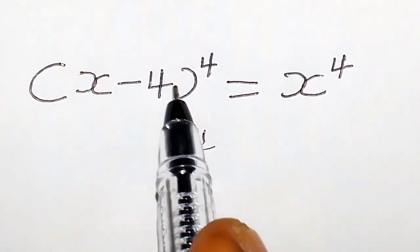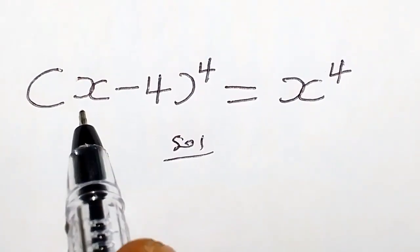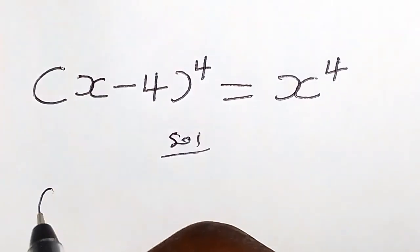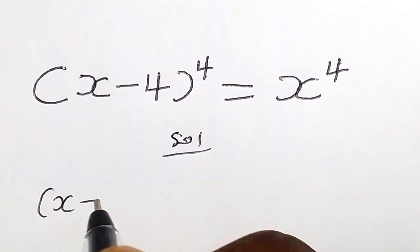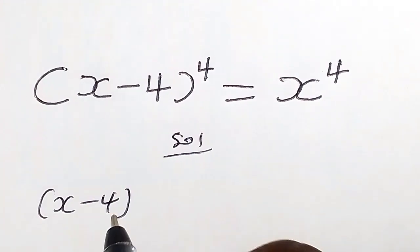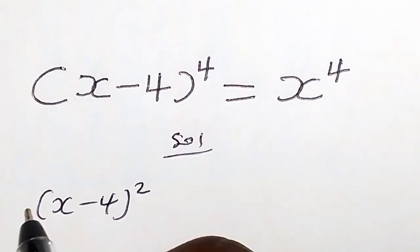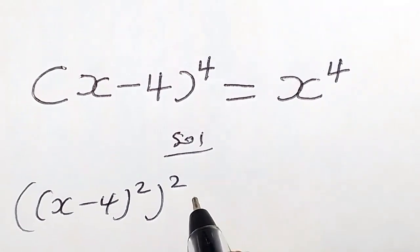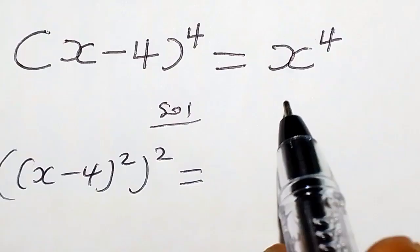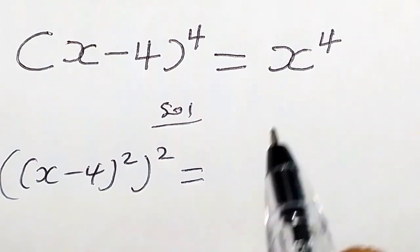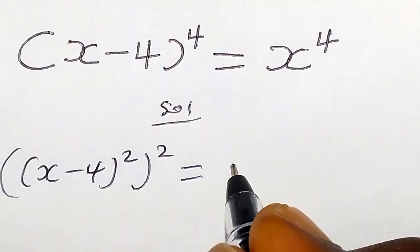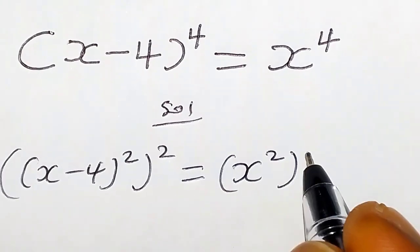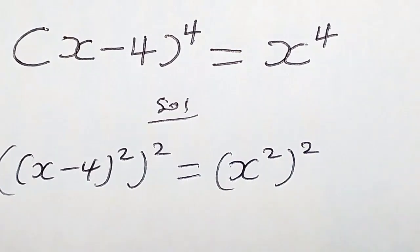Let's consider the left hand side. This can be written as (x minus 4) squared, in brackets, times 2. Likewise, the right hand side can be written as x squared, times 2.